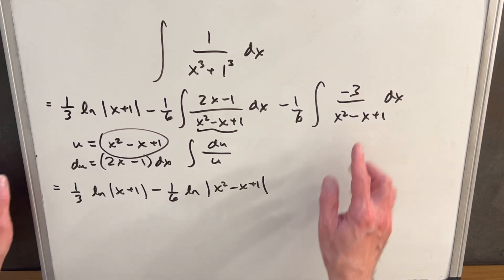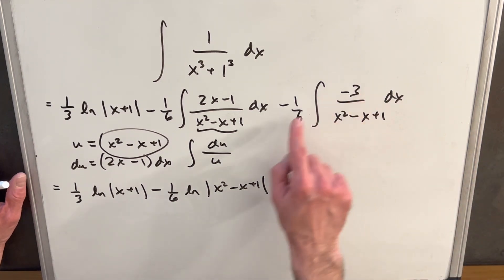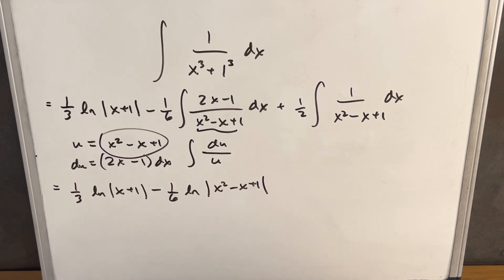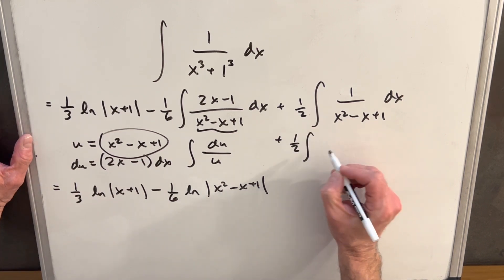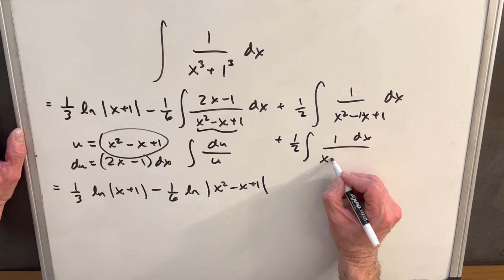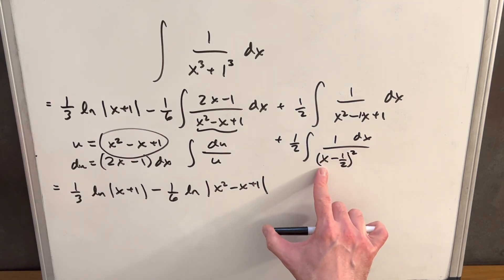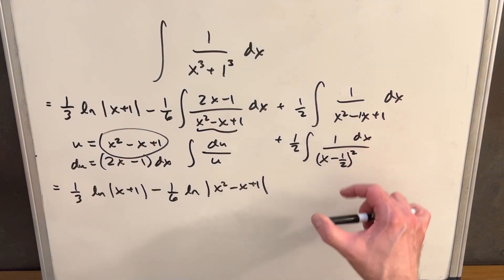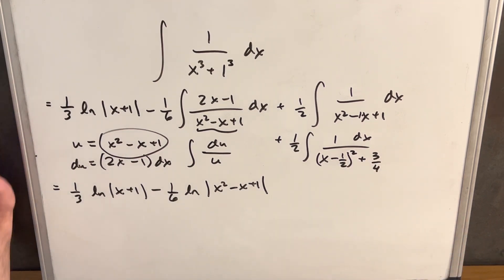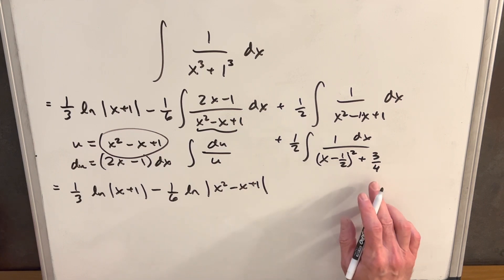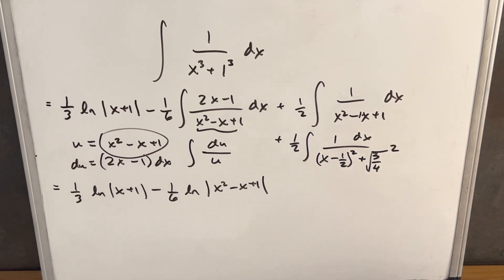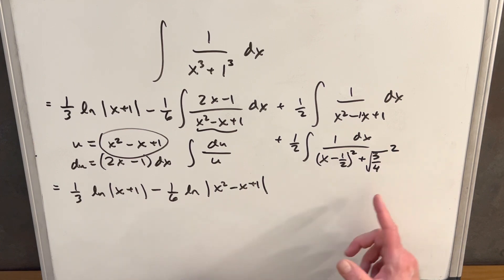For the remaining integral, I want to complete the square on the denominator. Taking half of the coefficient on x, which is 1, we write x minus 1 half squared. Squaring that out gives x squared minus x plus 1 fourth, so we add 3 over 4 to get the original expression. We write 3 over 4 as square root of 3 over 2, all squared, so that square root of 3 over 2 is our a value in the arctan formula.